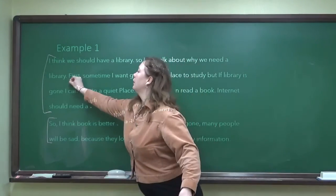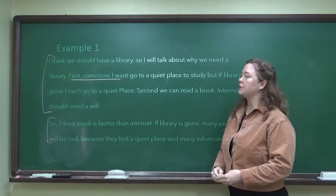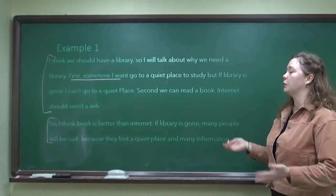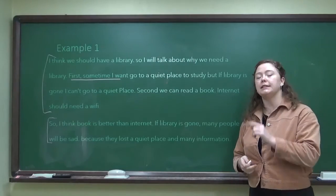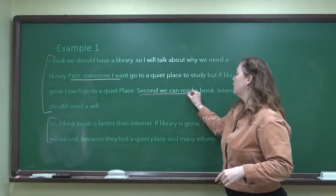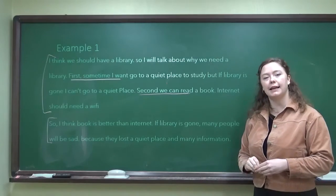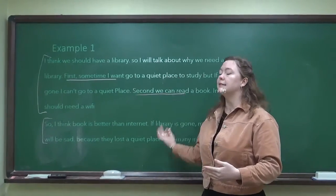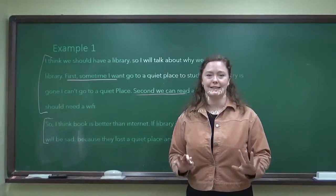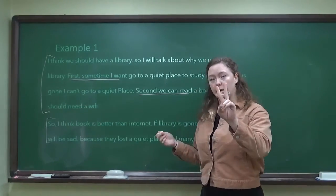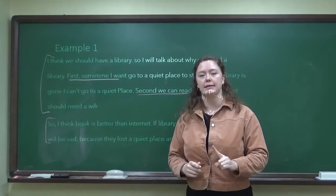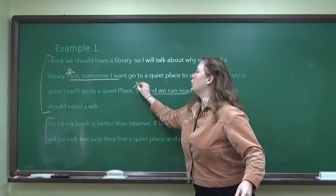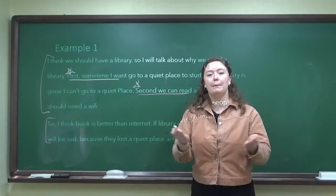Let's see. First, 'sometime I want to go to a quiet place to study, but if the library is gone, I can't go to a quiet place.' That's one reason. Second, 'we can read a book.' That's the second reason. So, there's two reasons. The problem in this essay is not reasons — this essay has two reasons, that's great. The problem is each reason should be its own paragraph.